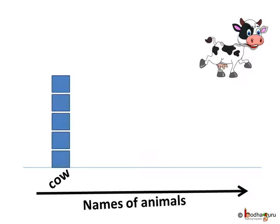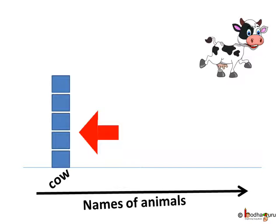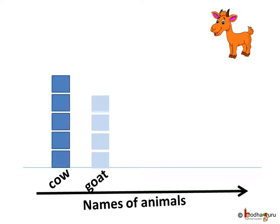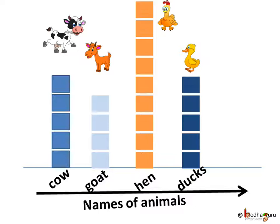We draw a line. He has five cows, so to represent five cows we stack up five boxes one above another and write the animal name below it. Say he has four goats — we stack up four boxes to represent goats. Each box represents one animal. He does this for all the animals.